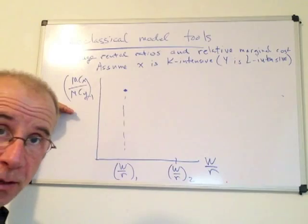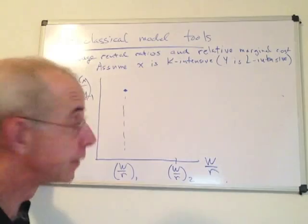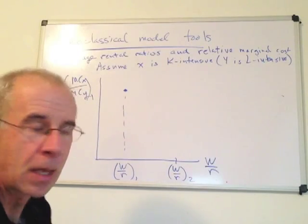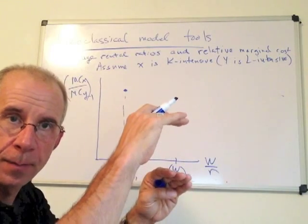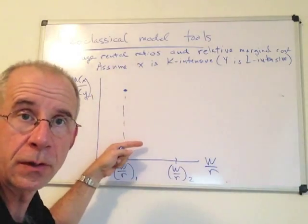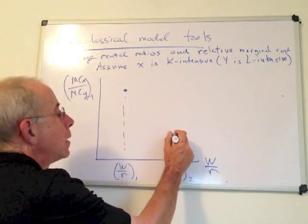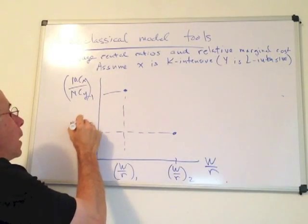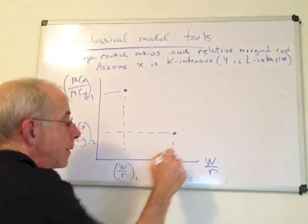So the marginal cost of Y goes up. The marginal cost of X goes up. But the cost of Y is going to go up faster than the cost of X. So if you have this ratio, the numerator going up a little bit and the denominator going up a lot, you're going to have a fall in the relative cost of X at some point like this.